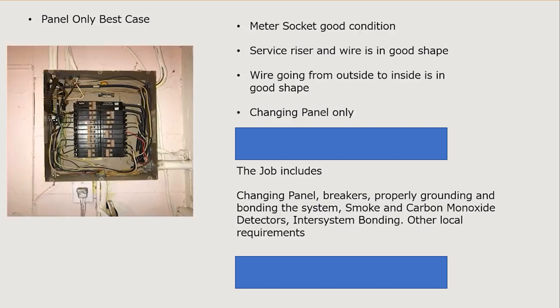The panel-only job includes the panel change, breakers, properly grounding and bonding the system, smoke and carbon monoxide detectors, inter-system bonding, and other local code requirements. The estimated cost is $1,800 to $3,000 labor plus parts and permit. Estimated material is between $800 and $2,000, depending on the inflationary market and permit costs. None of these scenarios include arc fault and ground fault breakers — if those are needed, add $1,500 to $2,000 depending on how many arc fault breakers are required.